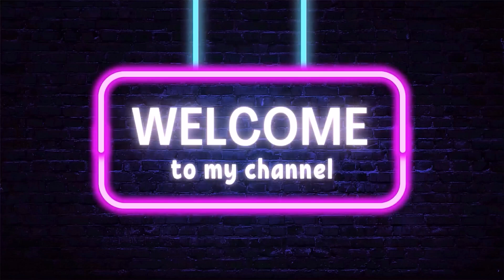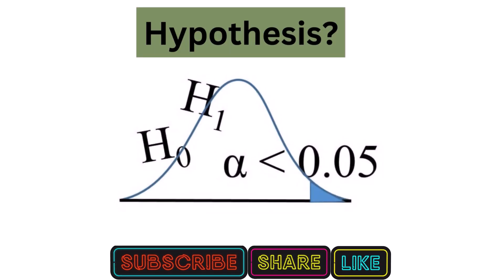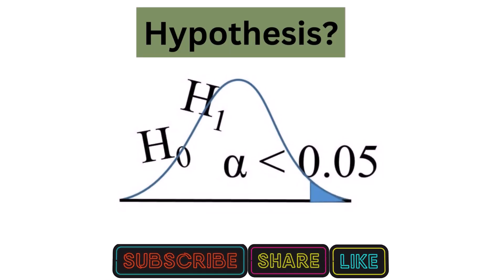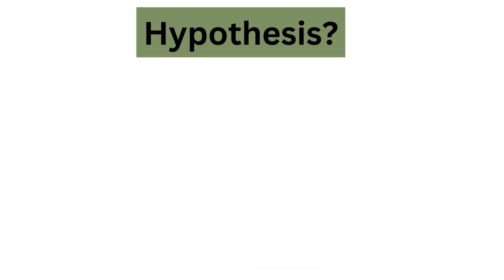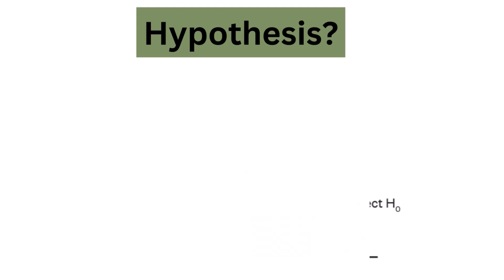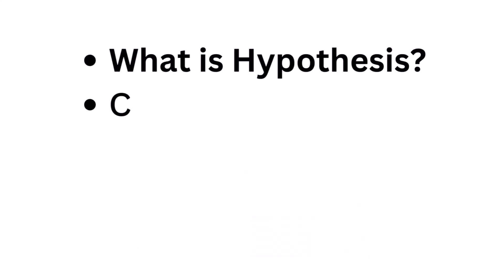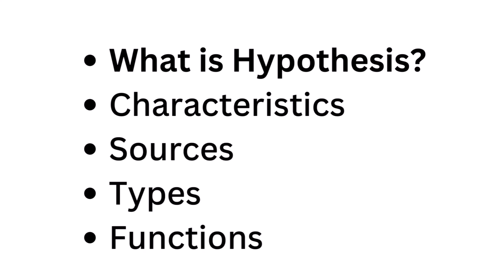Welcome to Research Hub. We have heard of many hypotheses which have led to great inventions in science. Assumptions that are made on the basis of some evidence are known as hypotheses. In this video, let us learn in detail about the hypothesis and the types of hypothesis with examples. Let's start.